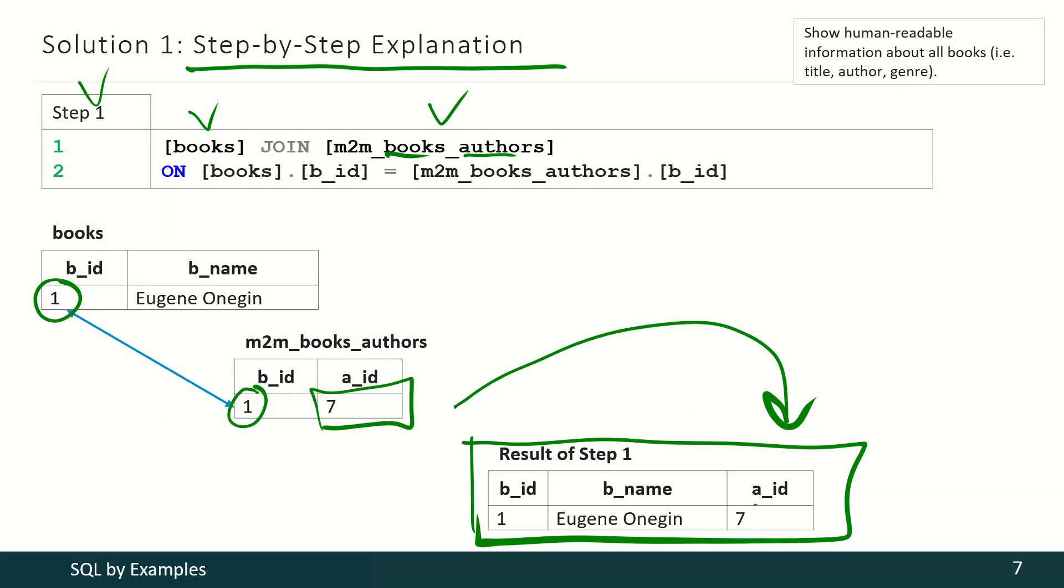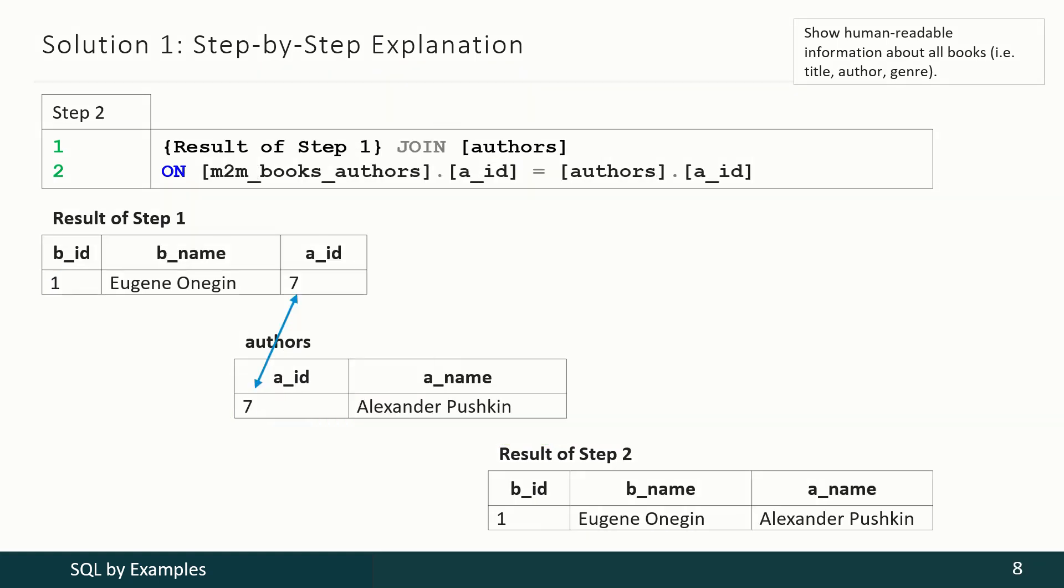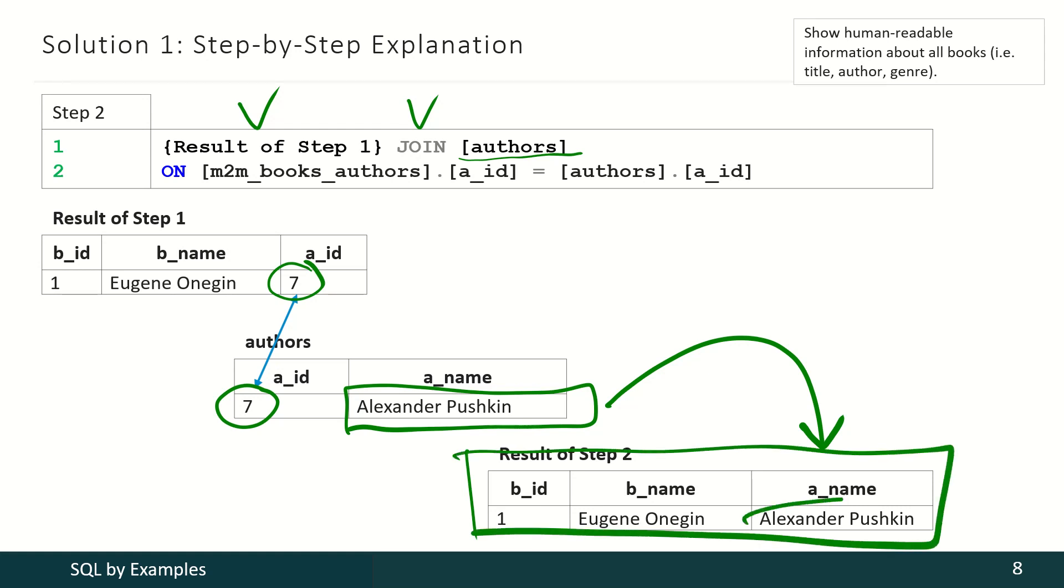You may see the author identifier here. The next join operator joins the temporary result number 1 and the information from the authors table. So the DBMS looks for this number and looks for this number, these identifiers. And then the DBMS selects this information and puts it in the next temporary result. And here's how we get that result with author name.